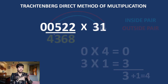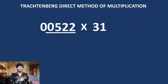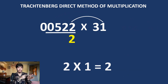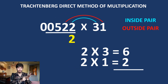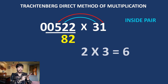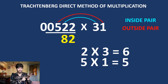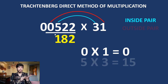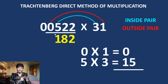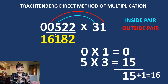Let's try another: 522 times 31, doing it as fast as we can. Two times 1 is 2. Inside pair, outside pair: 8. Again, inside pair, outside pair: 11 — write 1 and a dot. Again, inside pair, outside pair and carry: 16. Answer: 16182. This is how fast you can multiply using the Trachtenberg system.